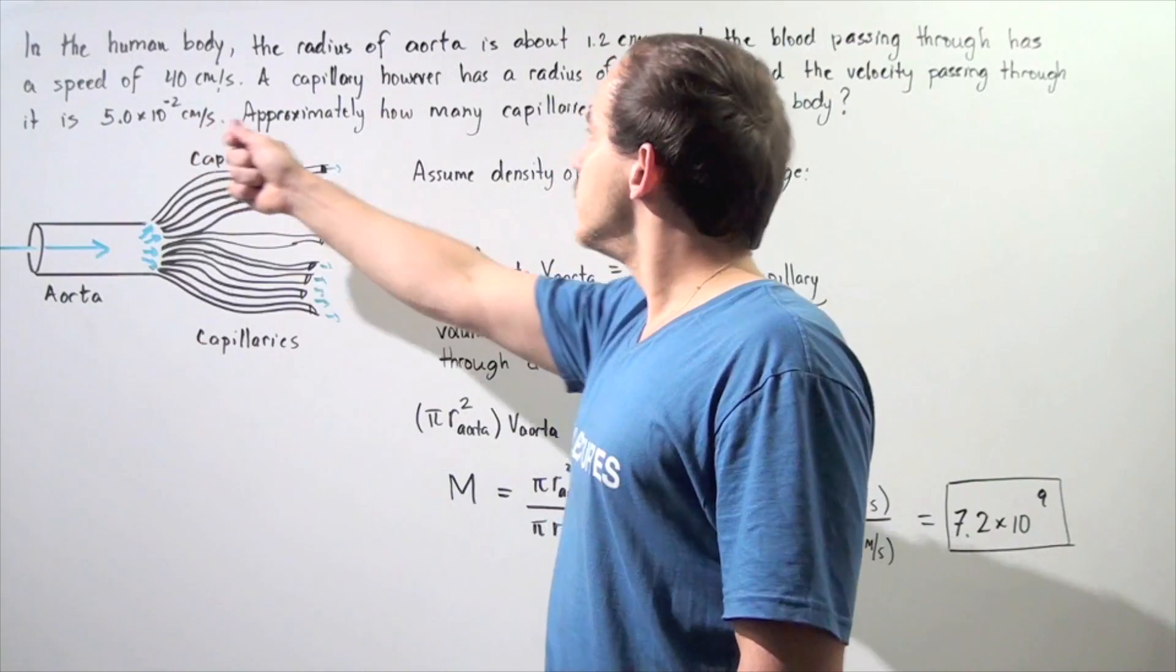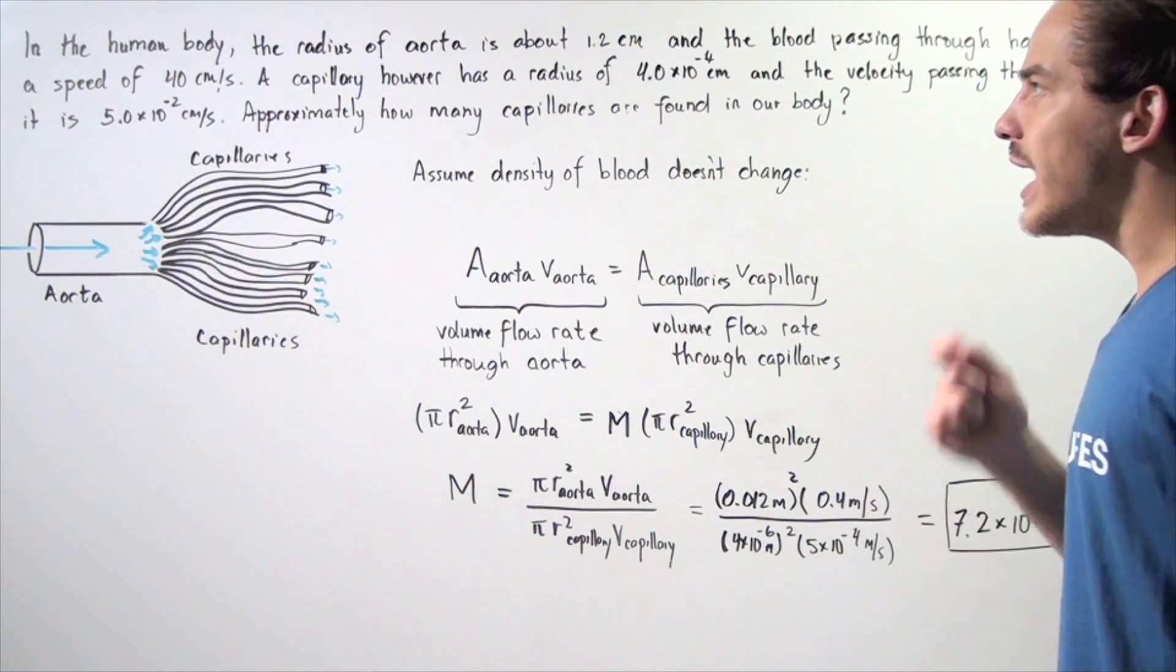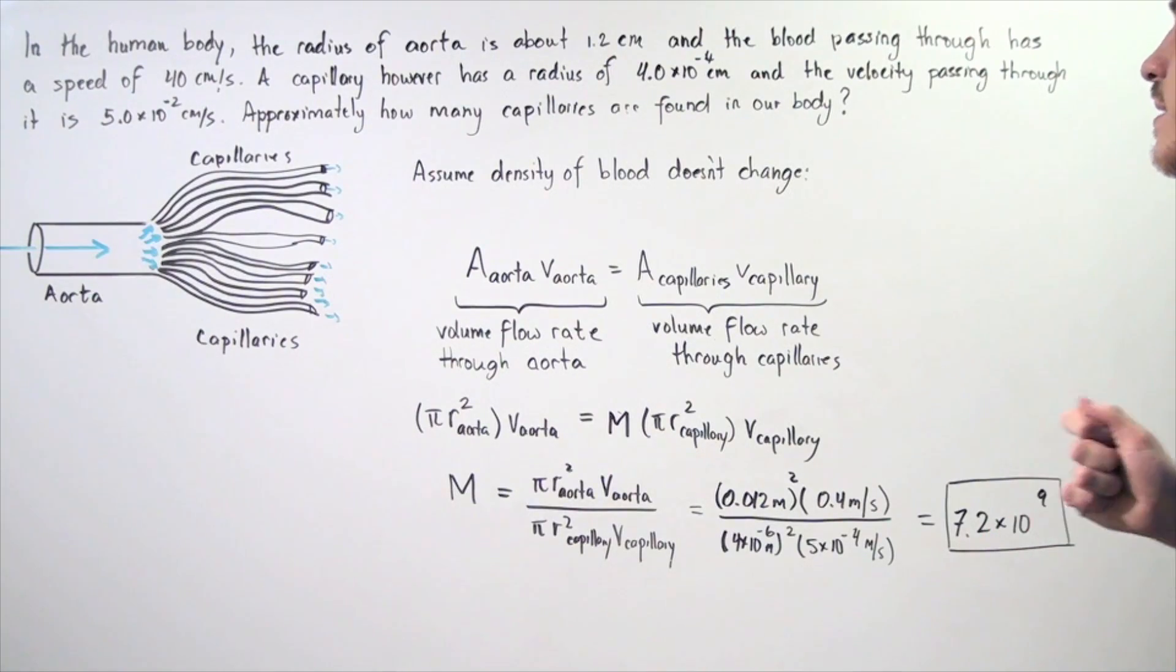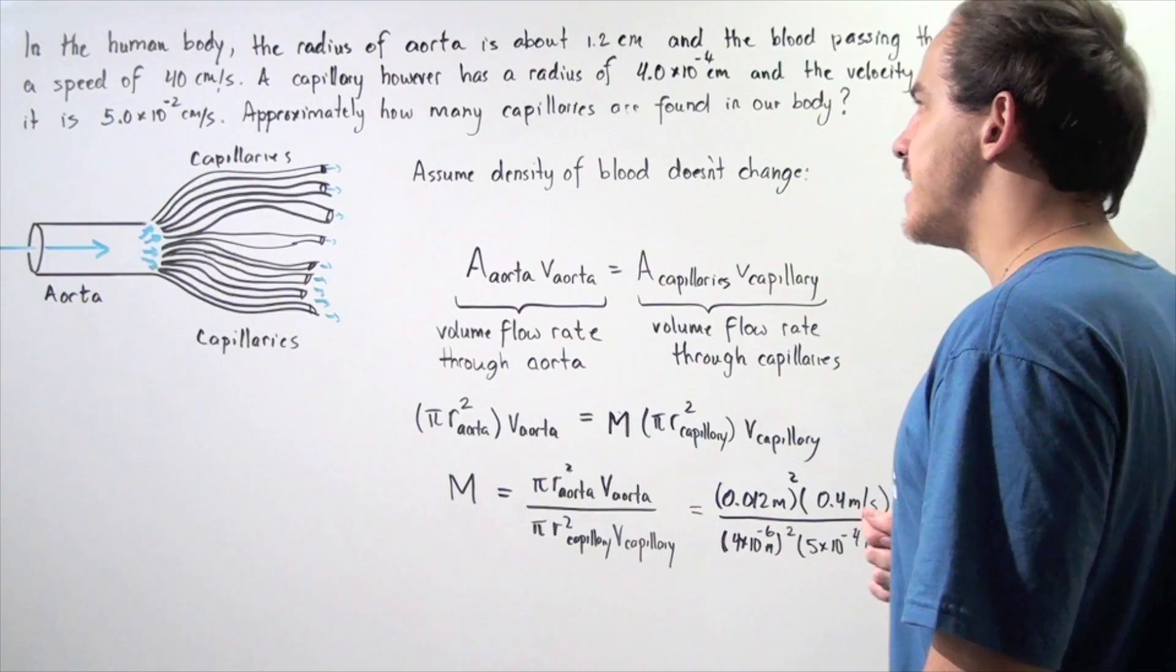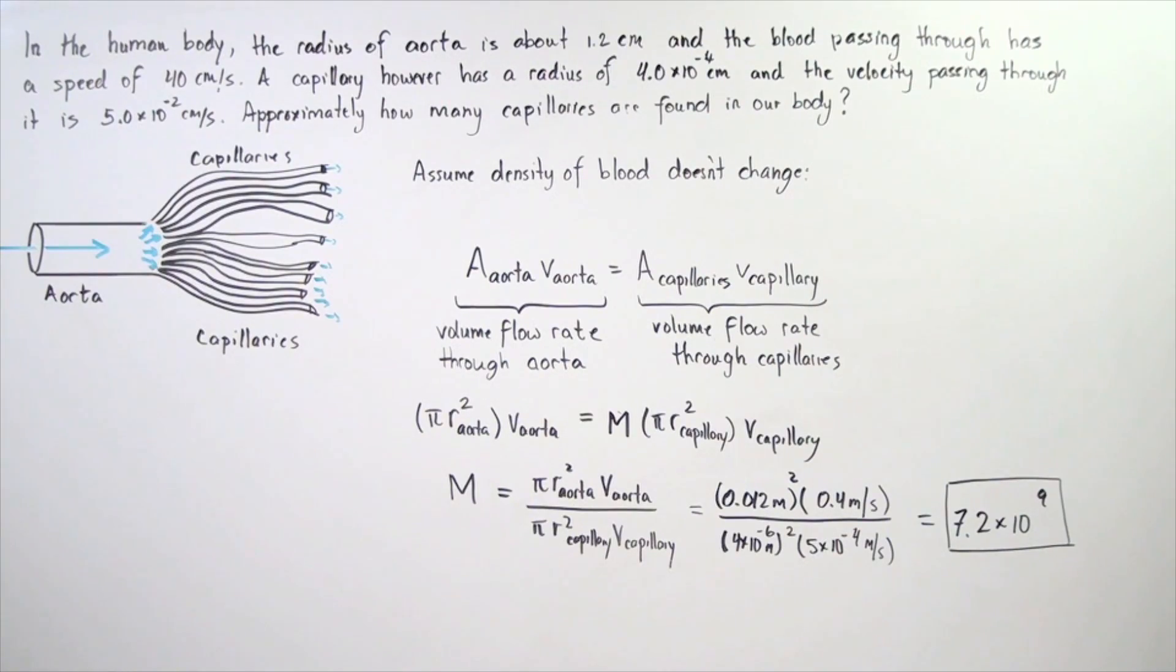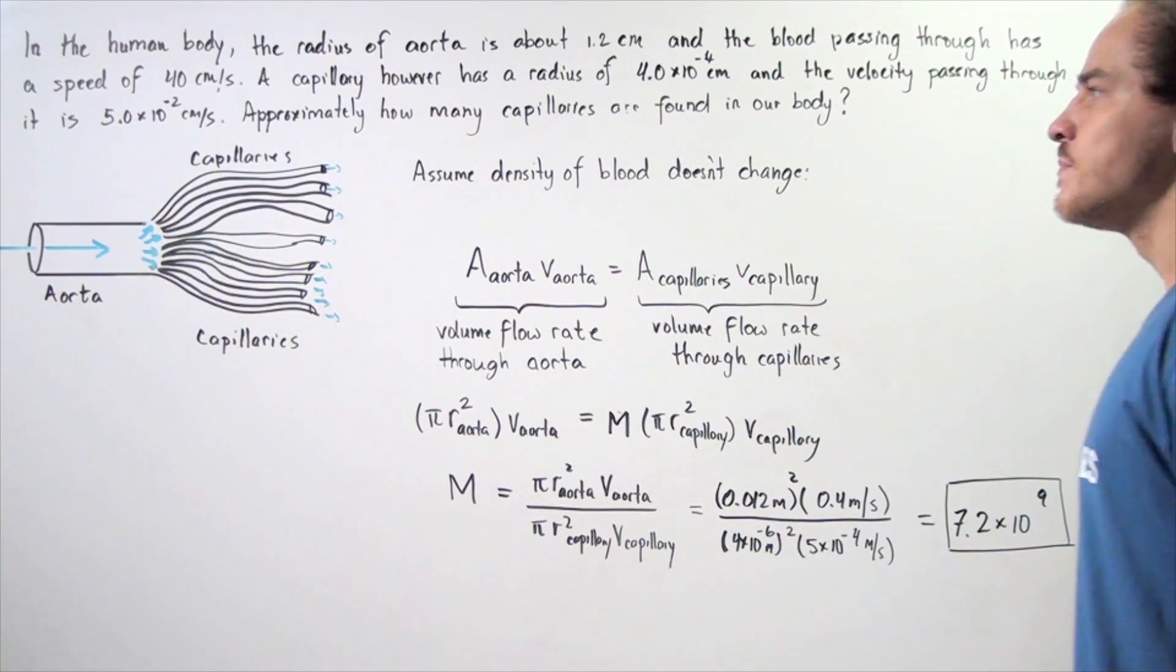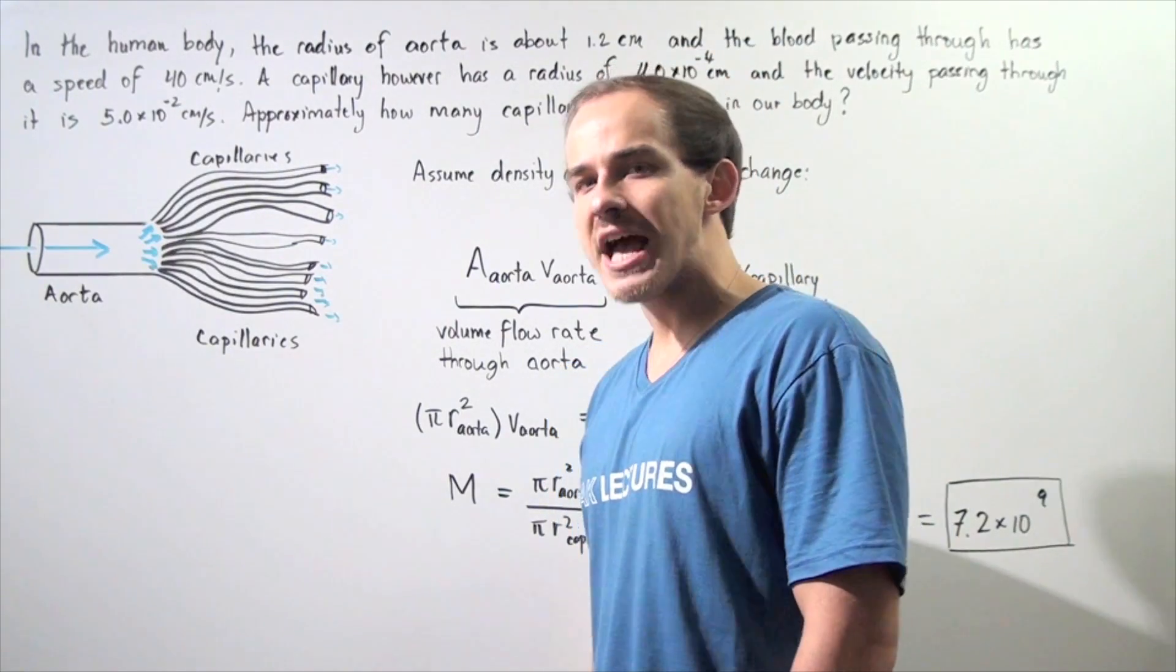Let's begin by looking at the given information. In the human body, the radius of the aorta is about 1.2 centimeters and the blood passing through has a speed of 40 centimeters per second. A capillary, however, has a radius of 4×10^-4 centimeters and the velocity passing through it is 5×10^-2 centimeters per second.